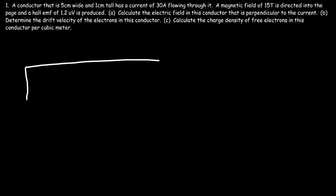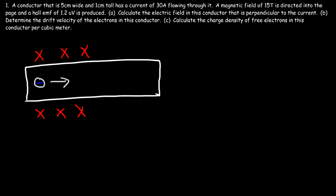Let's start with a picture. We have an electron moving in a certain direction and the magnetic field is into the page. Using the right-hand rule — point your thumb in the direction the electron is moving and your other four fingers into the page — the force comes out of your hand. That would be the force for a proton, so for an electron you need to reverse it. An electron will feel a magnetic force pushing it in a downward direction.